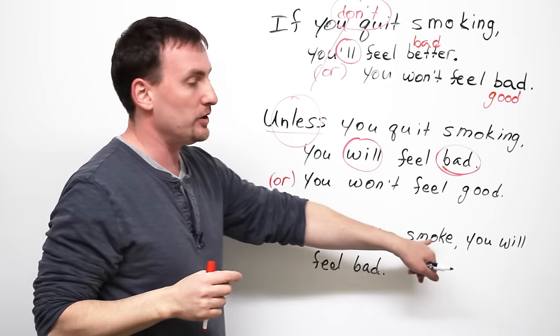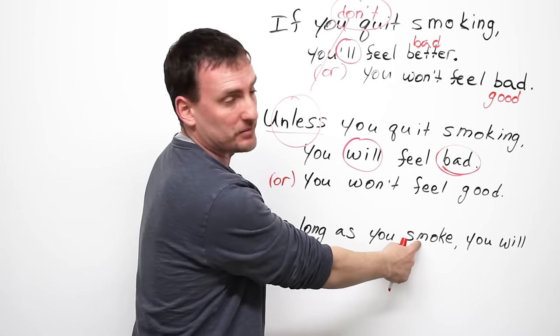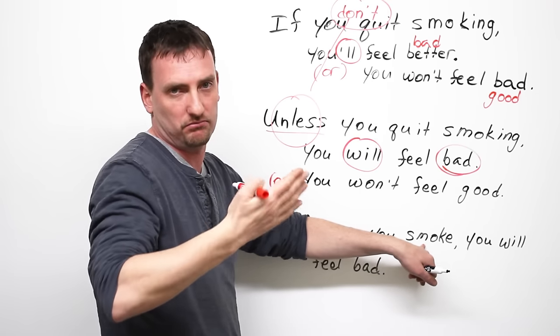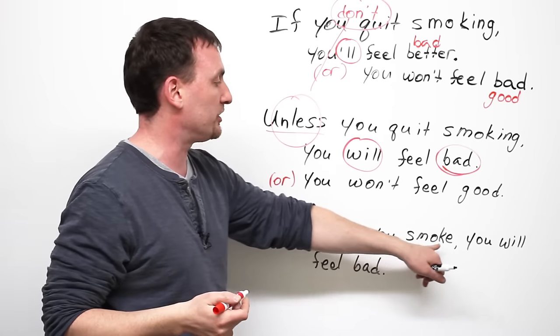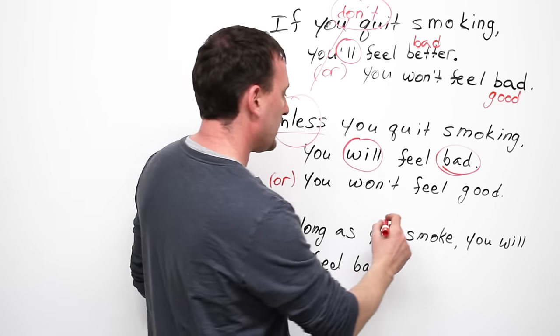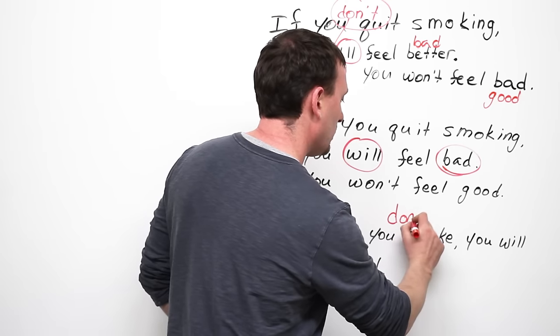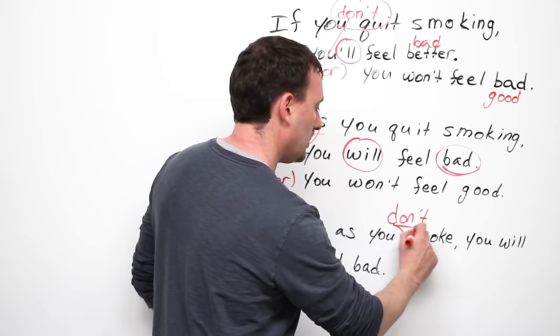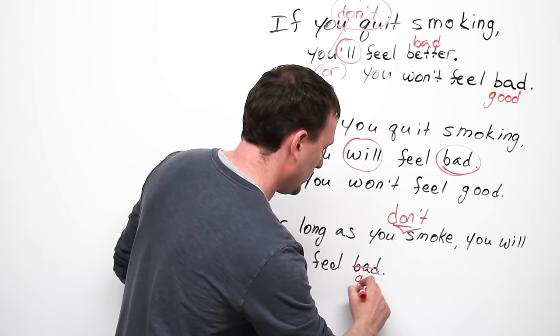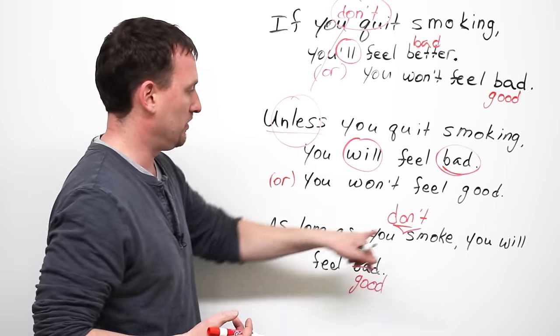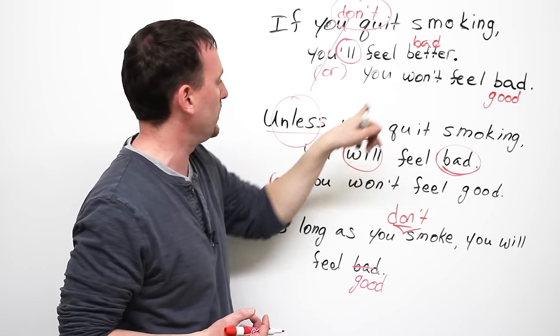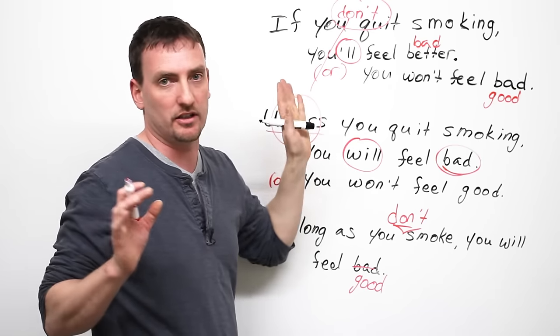As long as you smoke... Now, here I have the verb smoke. Here I put quit smoking. I went to the opposite verb. Smoke. As long as you smoke, you will feel bad. As long as you don't smoke, what is the consequence? You will feel good. What do you know? Don't changes the consequence. Unless is the consequence.